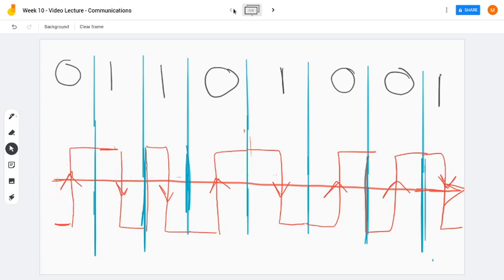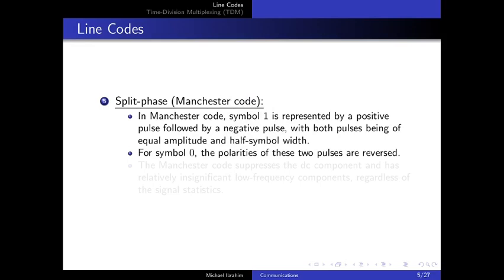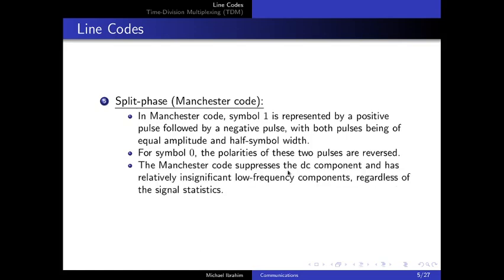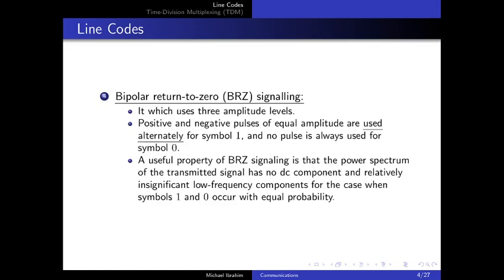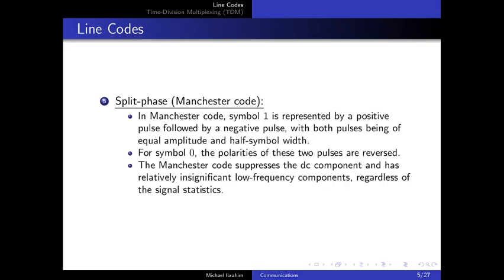In Manchester code, instead of a fixed pulse, each symbol is represented by two consecutive pulses. The Manchester code suppresses the DC component and has relatively insignificant low-frequency components, similar to bipolar RZ. This is important because communication channels typically suppress DC and low-frequency components, so we need a line code that avoids them.